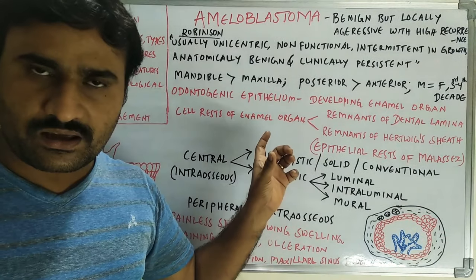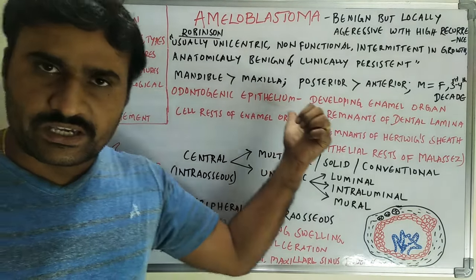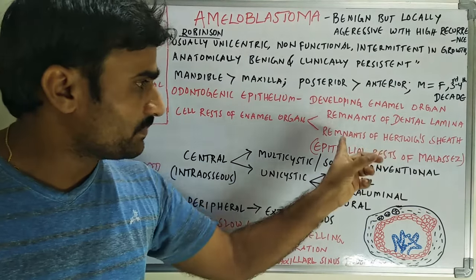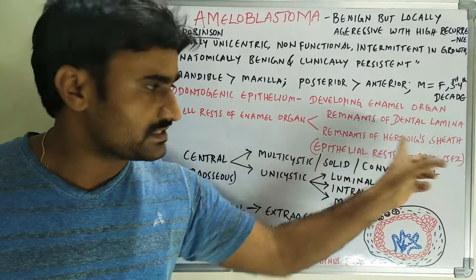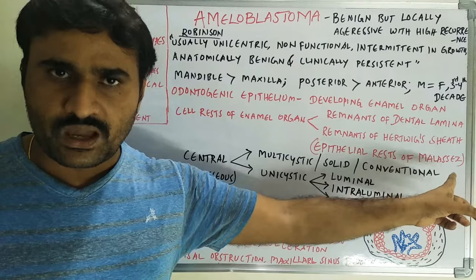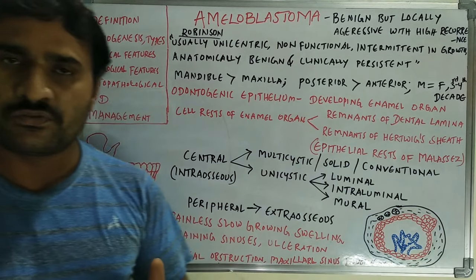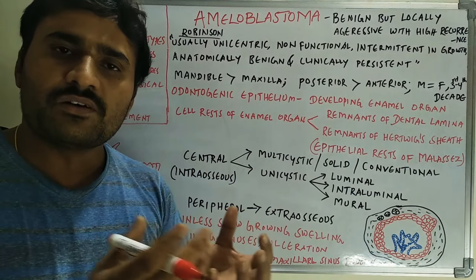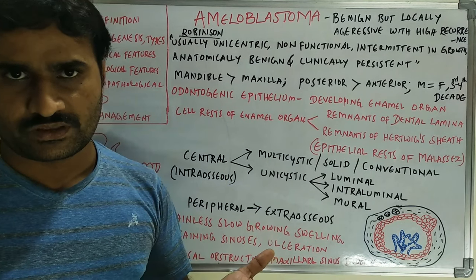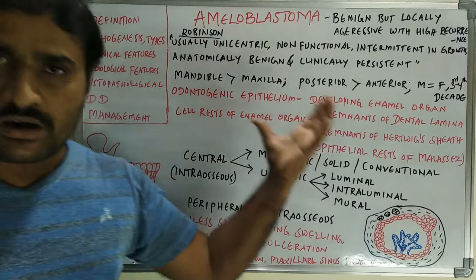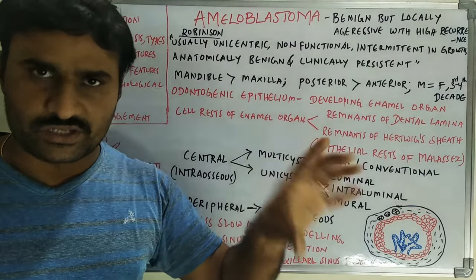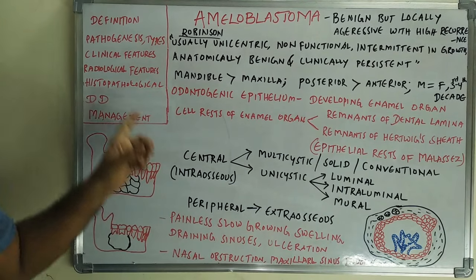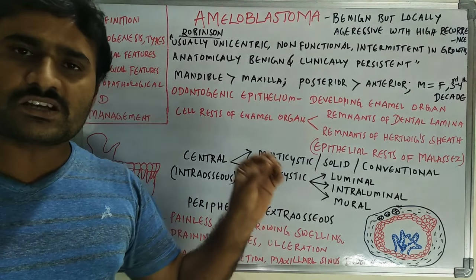These origins include the developing enamel organ, odontogenic epithelium, remnants of dental lamina, remnants of Hertwig's epithelial sheath — that is cell rests of Malassez — or in some cases it may develop from the epithelium of cysts like dentigerous cysts. These are the key points on pathogenesis.